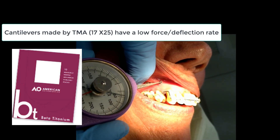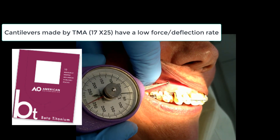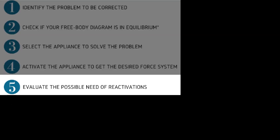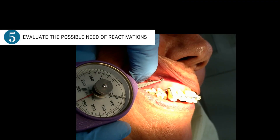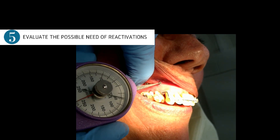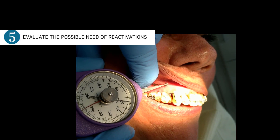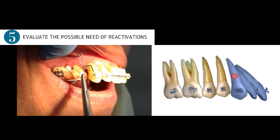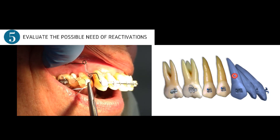Finally, you need to control the constancy of the force. It's advisable to use an appliance with a low force-deflection rate, which means that a low and constant force will work over a larger distance. This constancy is usually acquired by using cantilevers made from TMA wires. The choice of appliance also has an influence in step five, where you evaluate the need of reactivations. Considering the constants of the system, the three-piece appliance usually requires small reactivations and longer intervals between appointments. In the present case, we made only one or two reactivations during the four months the appliance had been in place.